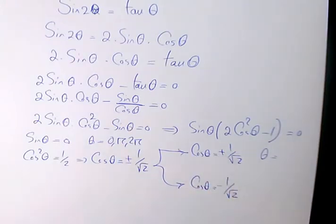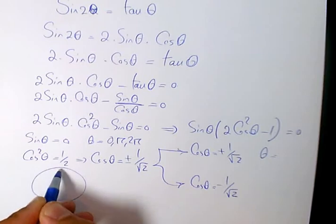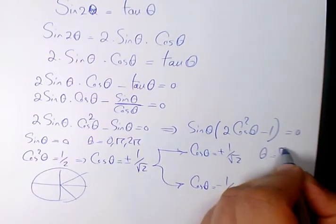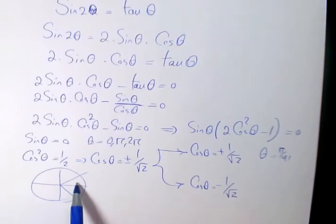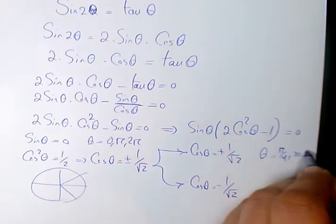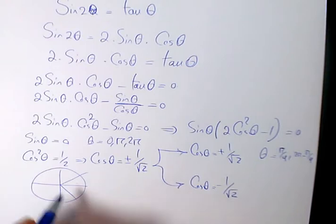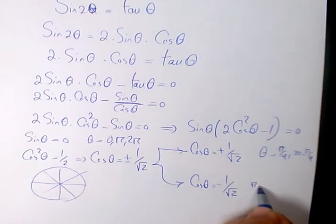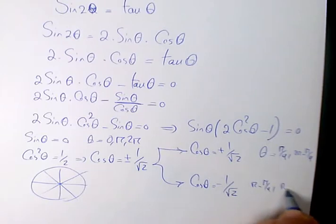Cosine is going to be positive in quadrant 1 and quadrant 4. So it's going to be π/4 and 2π - π/4. And it is negative in quadrant 2 and quadrant 3: π - π/4, and π + π/4.